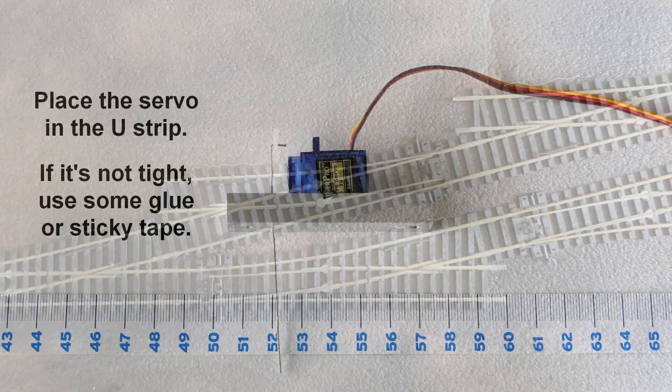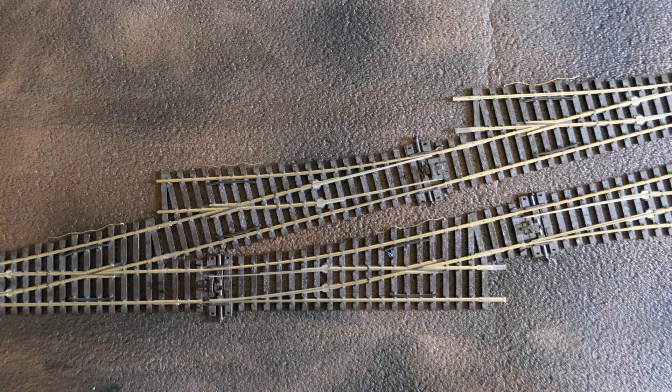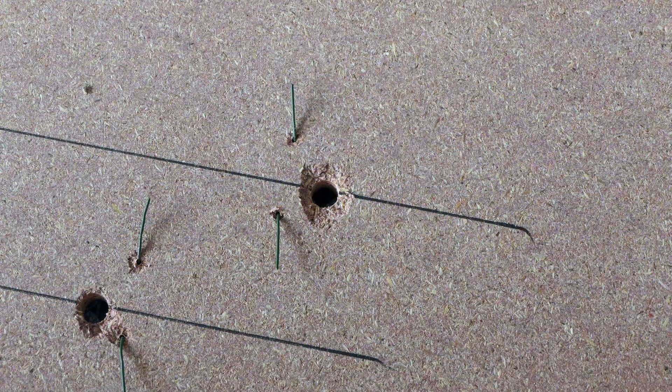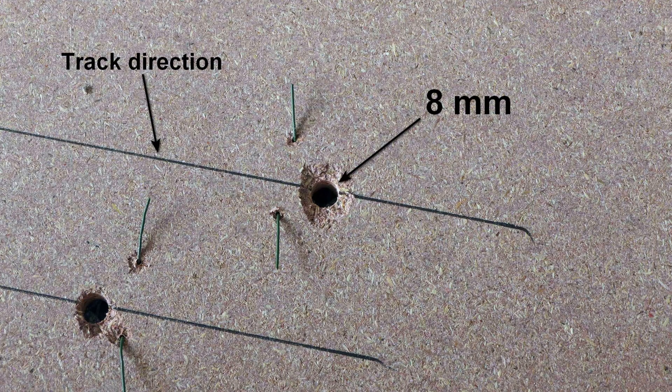And that turnout is this one on my mini layout. We are going to apply it under the table on this turnout over here. So what I did in advance is drill a hole, actually first I drew a line in the direction of the track because that's also the direction we are going to mount the aluminum strip in. And then this hole is 8 millimeters.